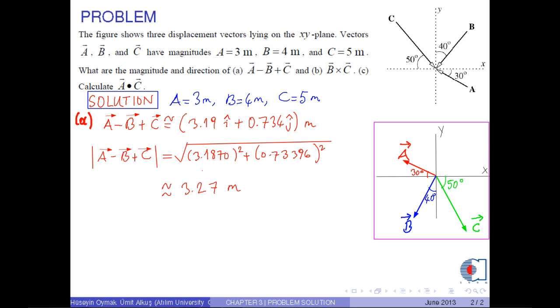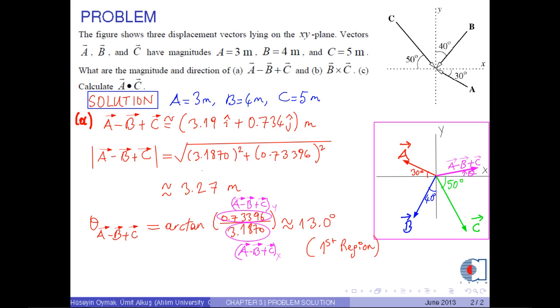And the direction, that is the angle theta A minus B plus C, is found by this formula: arctangent of 0.73396 over 3.1870. Therefore, the direction is approximately 13 degrees.